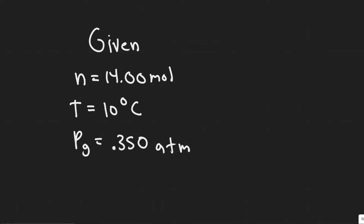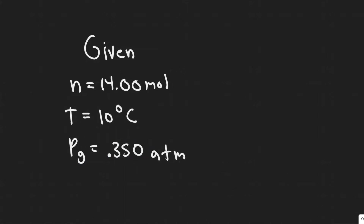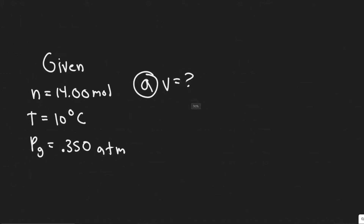So let's talk about what we're given. The number of moles is 14, the temperature is 10 degrees Celsius, and the gauge pressure is 0.350 atm. In part A, we're going to find the volume. To do this, we use the ideal gas law: pressure times volume equals the number of moles times the ideal gas constant times the temperature — PV = nRT.